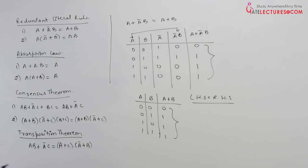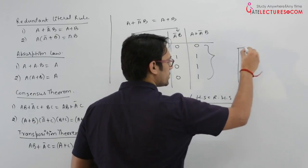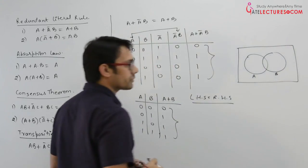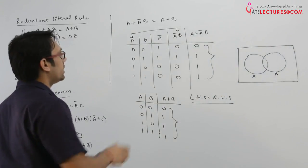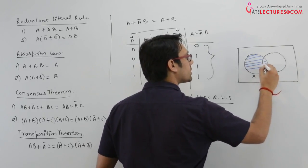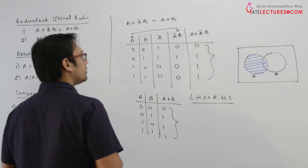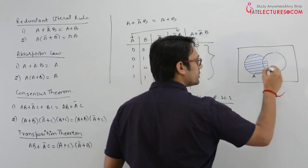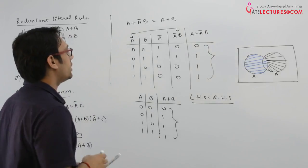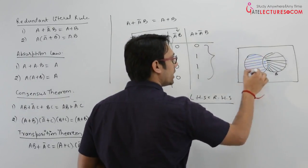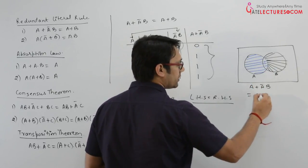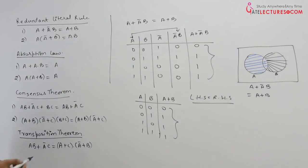We can also visualize this with the help of a Venn diagram. Assume this is the universe, this circle is denoting A, and this circle is denoting B. A complement B is the part of B which is not in A. A plus B adds that region to the complete A. As you can see, A plus A complement B covers exactly the same region as A plus B. It is a very simple thing to prove.